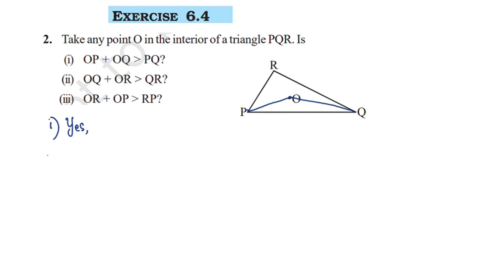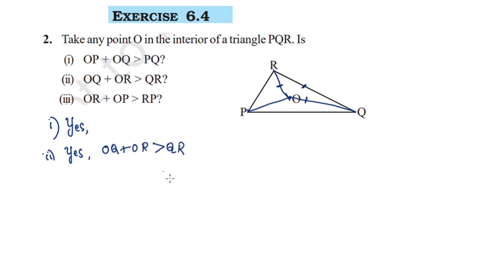Now let's write the second inequality. OQ plus OR is greater than QR. Using this triangle, the sum of any two sides of a triangle is greater than the third side. So OQ plus OR is greater than QR. The reason is that the sum of the length of any two sides of a triangle is greater than the third side.